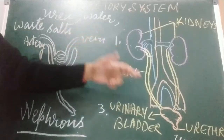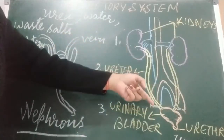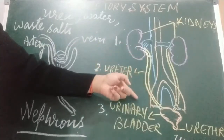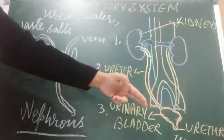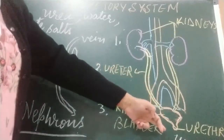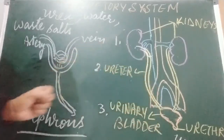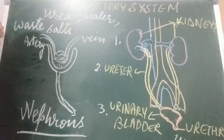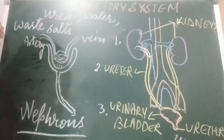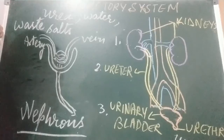The urine formed in the kidneys goes into the urinary bladder through tubes called ureters. Urine is stored in the urinary bladder and expelled from the body at regular intervals through the urethra. An adult human normally passes about 1 to 1.8 litres of urine in 24 hours. Urine consists of 95% water, 2.5% urea, and 2.5% other waste products like uric acid and ammonia.